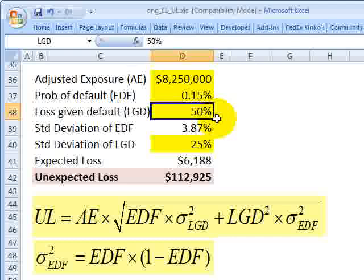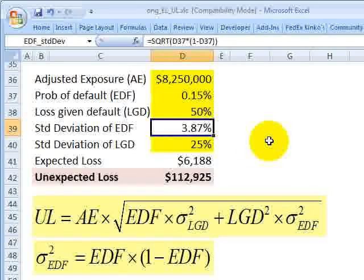And you'll note that one minus the loss given default is equal to the recovery rate. So 50% loss given default is the same as 50% recovery rate. I also need, in order to calculate this one standard deviation or volatility of unexpected loss, I need the variance of the loss given default and the variance of the expected default frequency.